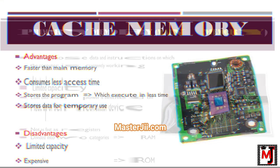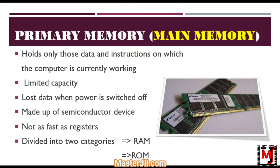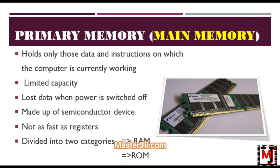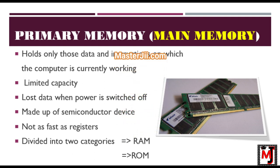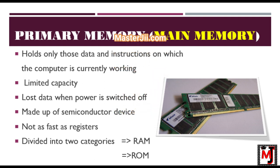The second type of memory is primary memory or main memory. Primary memory holds only those data and instructions on which the computer is currently working. It has a limited capacity and data is lost when power is switched off. It is generally made up of semiconductor devices. These memories are not as fast as registers. It is divided into subcategories: ROM and RAM. RAM stands for random access memory and ROM stands for read-only memory.